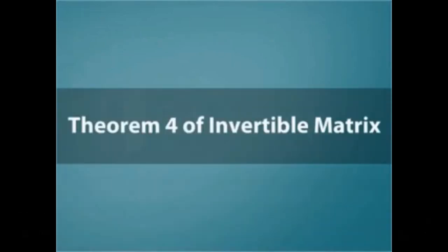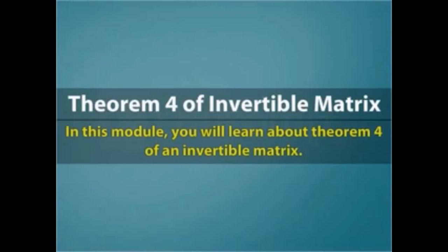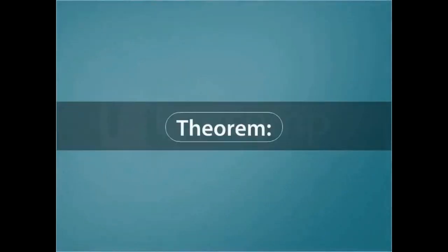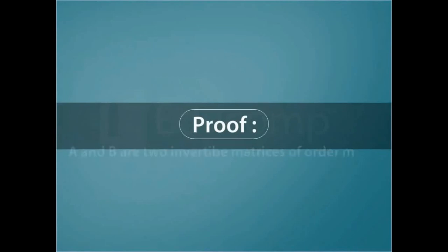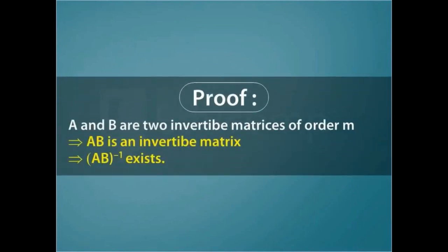Theorem 4 of invertible matrices: If A and B are two invertible matrices of the same order, then AB whole inverse equals the product of B inverse and A inverse. Let us now prove this statement. Let A and B be two invertible squared matrices.